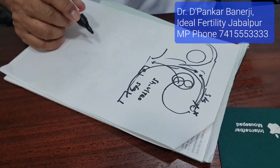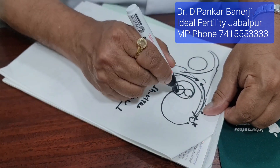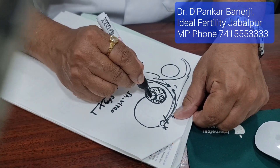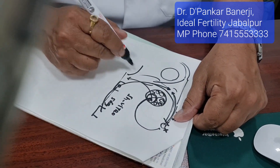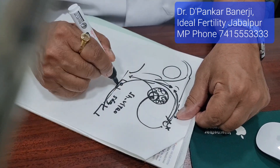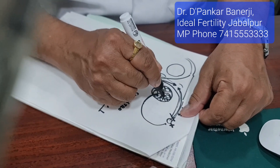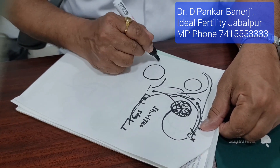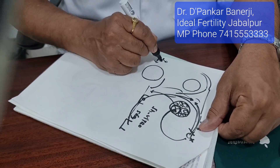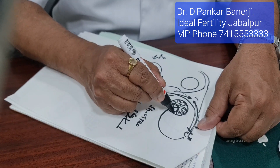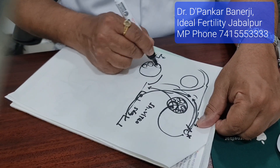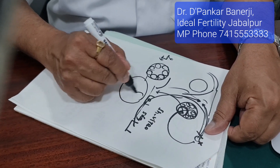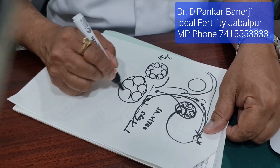Normally a single egg is released every month and there is competition between follicles — only one wins. But in IVF, we want more eggs outside, so we support the ovaries with injections so that the follicles which are competent enough — not just the champion but the others too — all run together. When we do this, there will be multiple follicles; this is called a Graafian follicle.